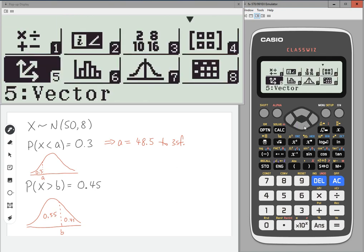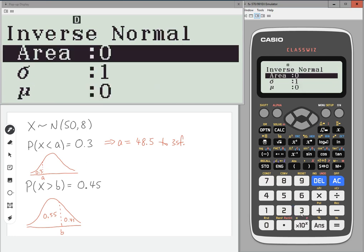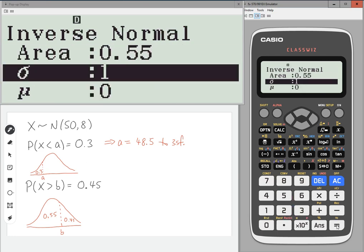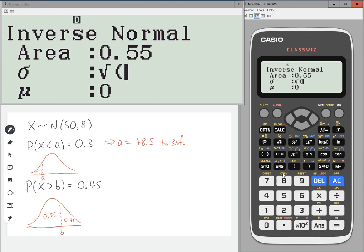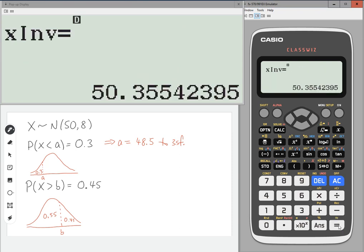So go to menu, number 7, inverse normal. Area is 0.55. Sigma is the square root of 8 and the mean is 50. Press equals. And we get B is 50.4 to three significant figures.